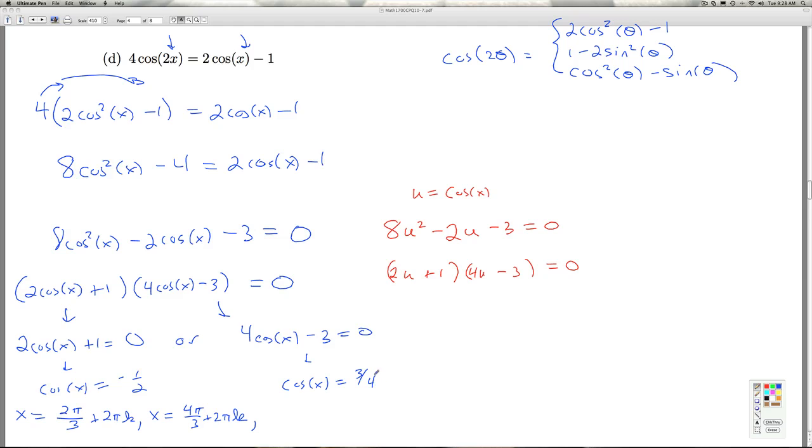Where's cosine equal to positive 3 quarters? Well, 3 quarters isn't one of the common angles that we know, so I've got to use the arc cosine function. So in quadrant 1, I get arc cosine 3 quarters plus 2 pi k. And the other place the cosine is positive is over there in quadrant 4. And so in quadrant 1, I've got this guy. In quadrant 4, I can use that as the reference angle. So it's 2 pi minus that, plus 2 pi k.